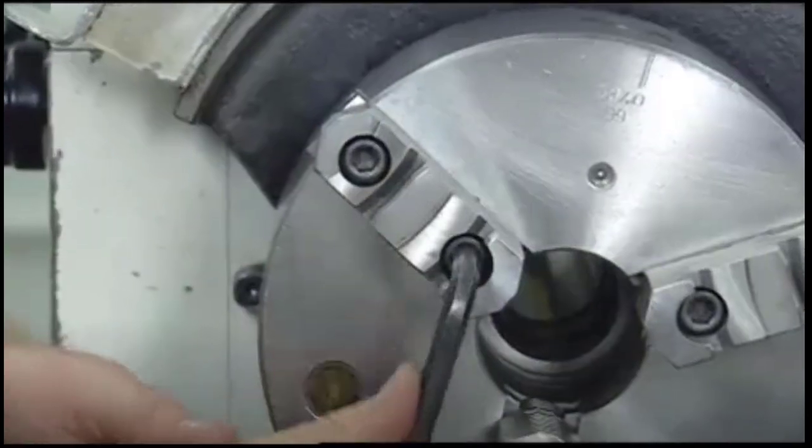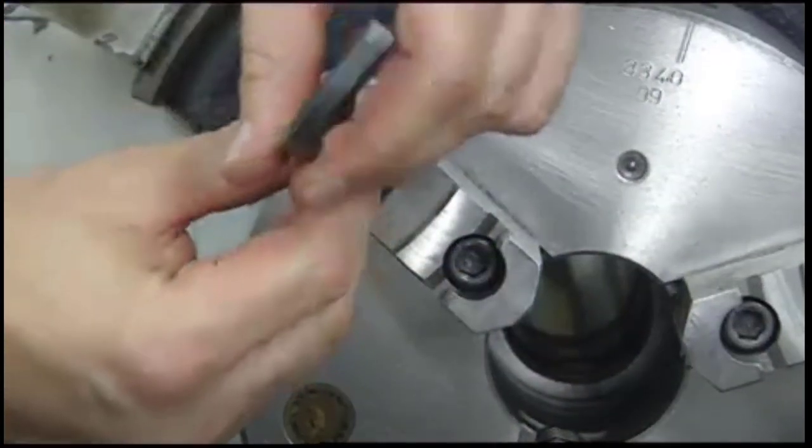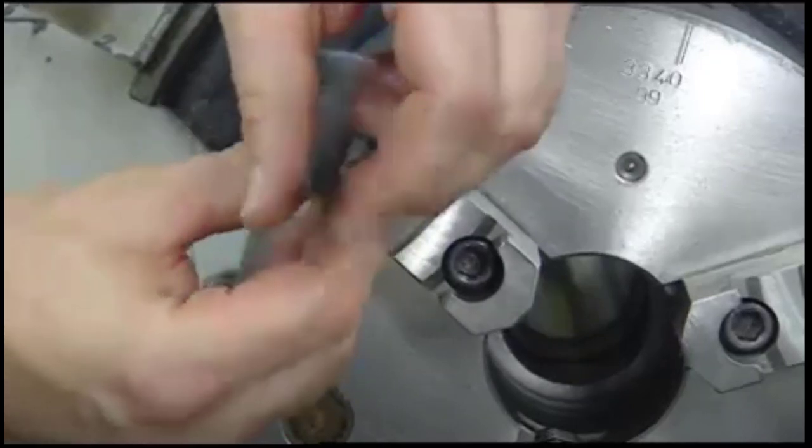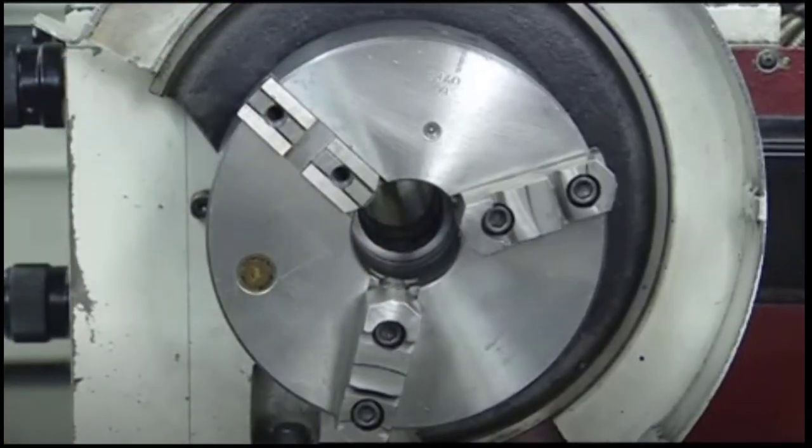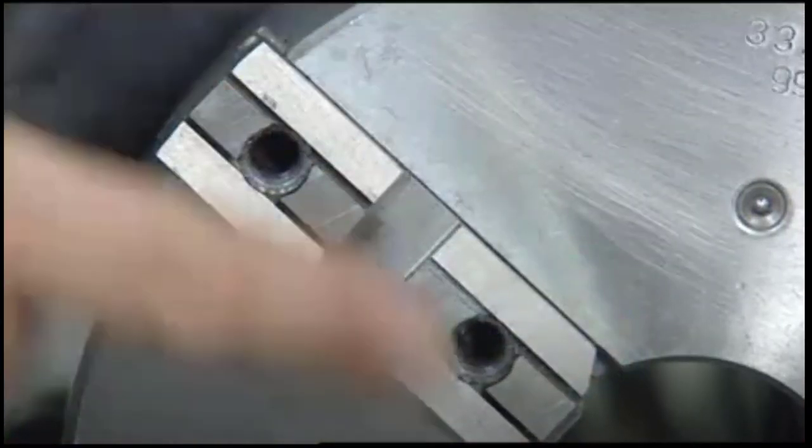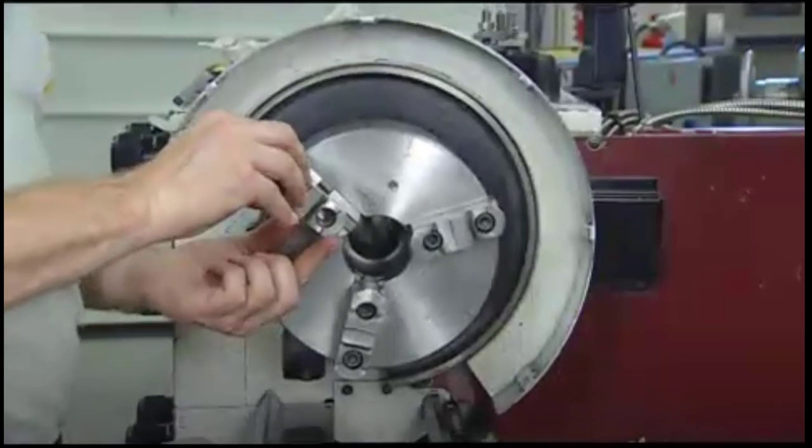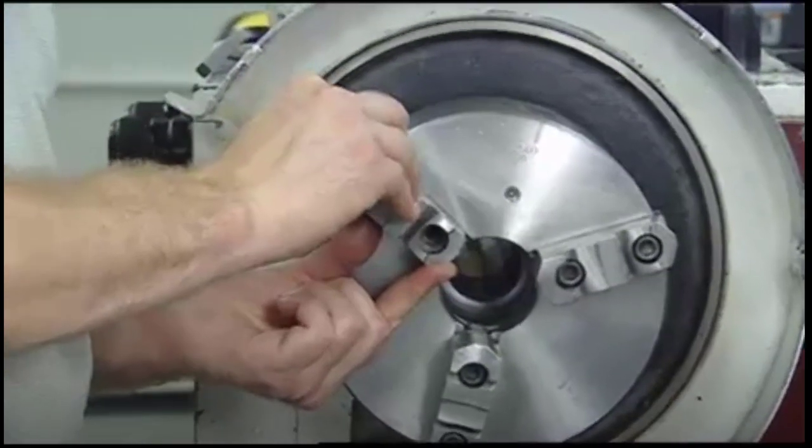Some chucks are equipped with two-piece jaws that can be reversed without removing the entire jaw from the chuck body. Simply remove the mounting bolts along with the top piece of the jaw. Next, check to make sure that the mating surfaces of both parts of the jaw are clean. Then reinstall the top piece in the reverse position and secure with mounting bolts.